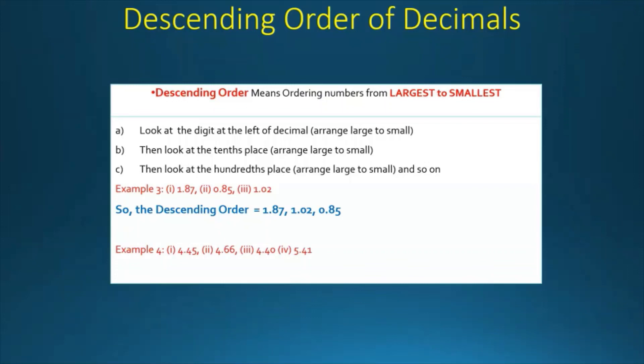The last example will be 4.45, 4.66, 4.40, and 5.41. So the descending order will be 5.41, 4.66, 4.45, and 4.40.